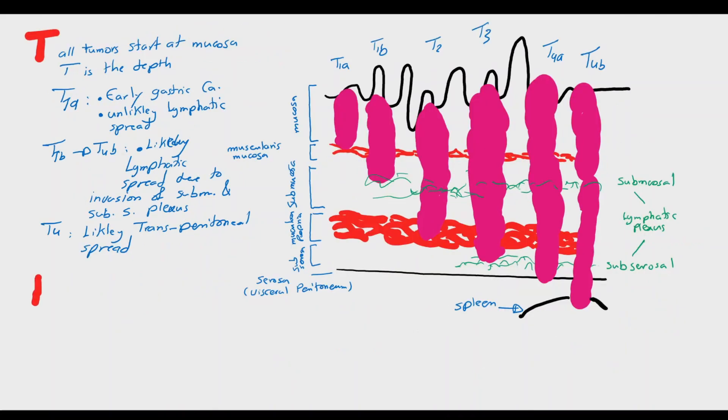The N component is the lymph node metastasis. N0 means no lymph nodes detected, N1 is 1 to 2 lymph nodes, N2 is 3 to 6, N3A is 7 to 15, and N3B is more than 15.